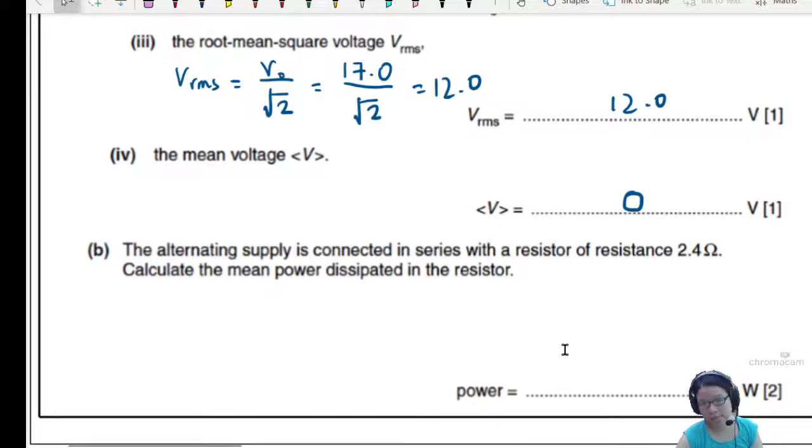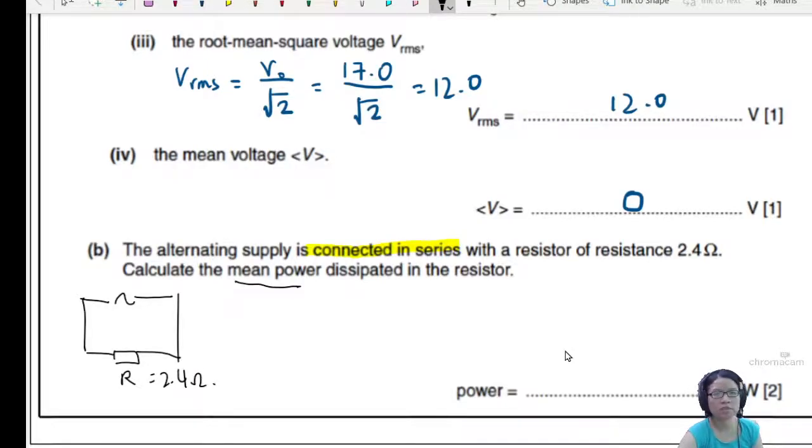Next. Alternating supply is connected in series with a resistor. Okay. This is a lot like the previous example, the first example. So we'll connect the AC with a resistor R. And this resistance is 2.4 ohm. Calculate the mean power. Well, since we have RMS voltage, we are going to use the equation P is V² over R.